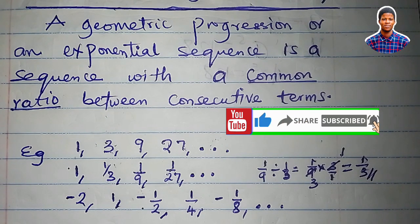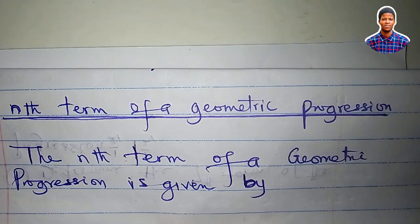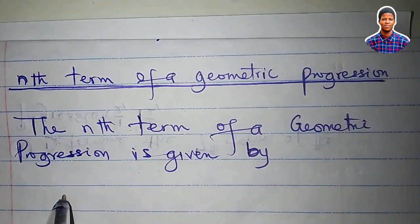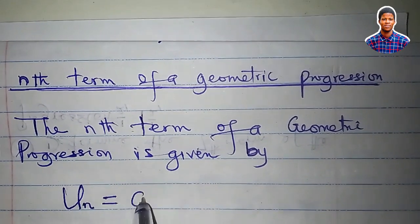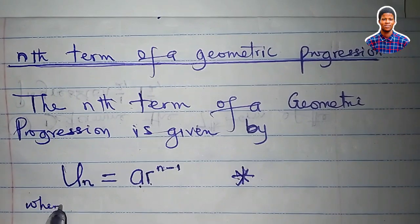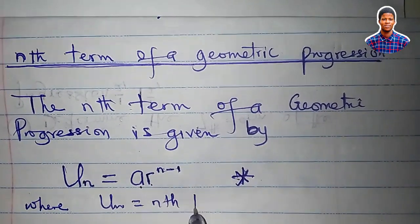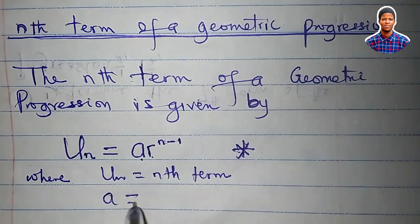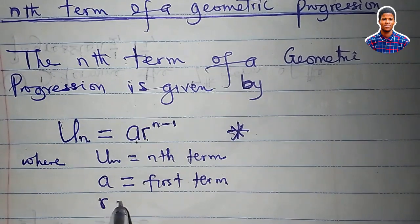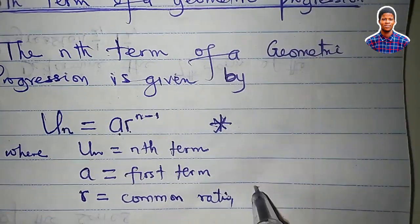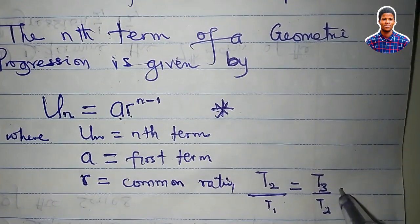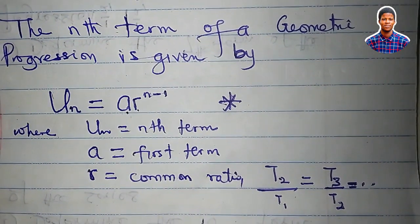We'll now talk about the nth term of a geometric progression. The nth term is given by the formula: u_n = a · r^(n−1). Here, u_n is the nth term, a is the first term — whether arithmetic or geometric, a is always the first term — and r is the common ratio, which is the second term divided by the first term, equal to the third term divided by the second term, and so on.